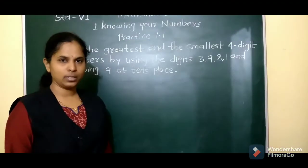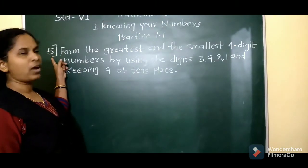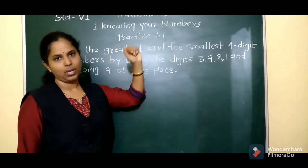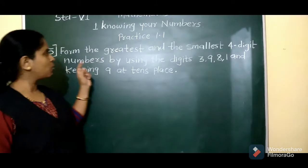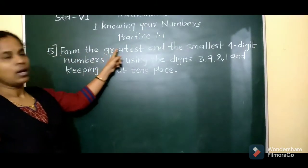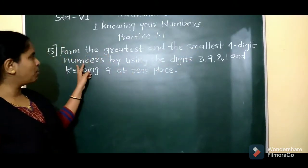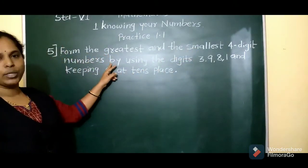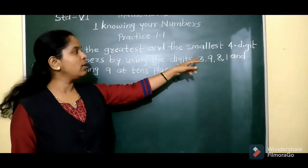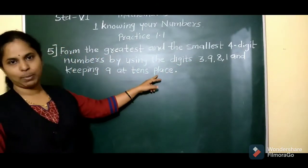Hello students, today we will solve question number 5 from practice 1.1. The question is: form the greatest and the smallest 4-digit numbers by using the digits 3, 9, 8, 1 and keeping 9 at the tens place.